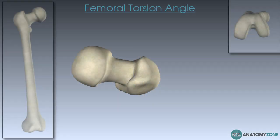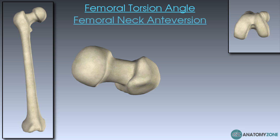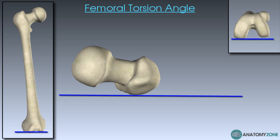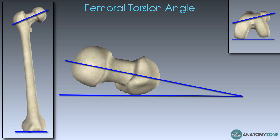Finally, the femoral angle of torsion — also called femoral neck anteversion or the angle of declination. To visualise this, imagine the femur lying flat on a table. You take a line on the base of the table and another line running through the head and neck of the femur, and where those two lines intersect you get an angle. The middle picture shows a top-down view of the femur, making it easier to see the relationship between the axis of the femoral head and neck and the femoral condyles.